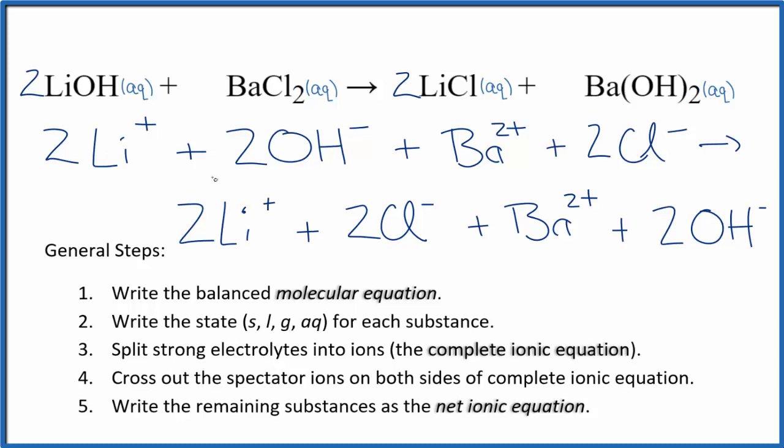If we were to cross out the spectator ions: two lithiums, two lithiums; two hydroxides, two hydroxides; two bariums; and then two chlorides. There's nothing left, so there's no reaction taking place here.